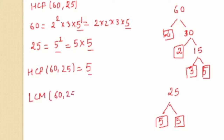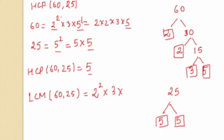To find the LCM of 60 and 25, consider the greatest power of every prime across both factorizations. From 60 we take 2², 3¹, and from both we consider 5 — the greatest power of 5 between 5¹ and 5² is 5². So LCM = 2² × 3 × 5² = 300.